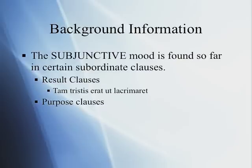Now, the subjunctive — so far we have seen the subjunctive used in subordinate clauses, in dependent clauses, like the result clause, or purpose clauses, or circumstantial clauses, or causal clauses, and so on. For example, 'tam tristis erat ut lacrimaret' — the main verb is 'erat,' the subordinate verb is 'lacrimaret,' which is our subjunctive in that result clause.